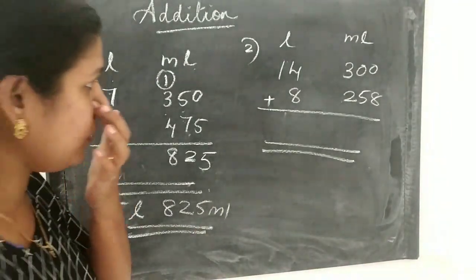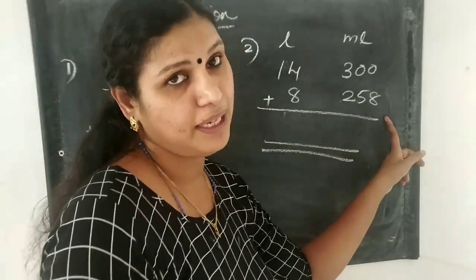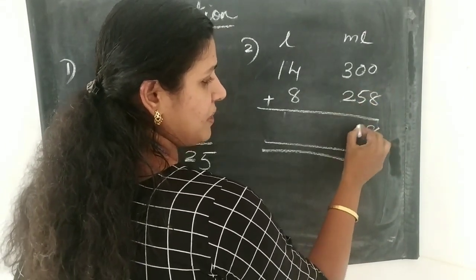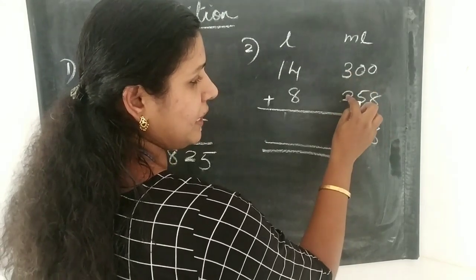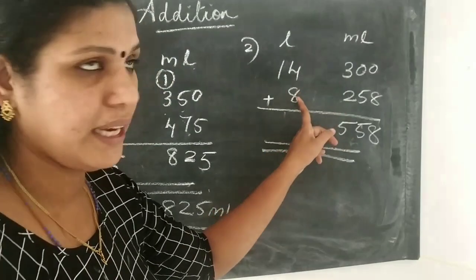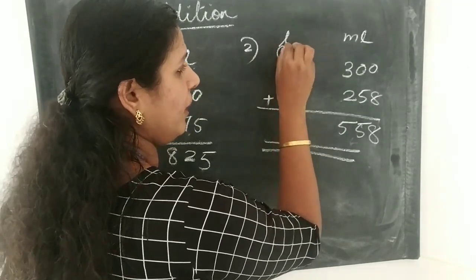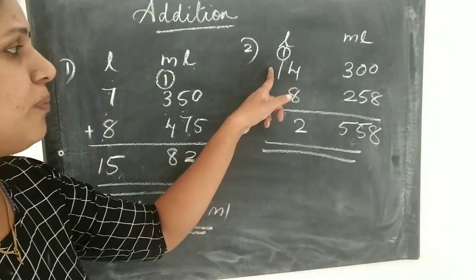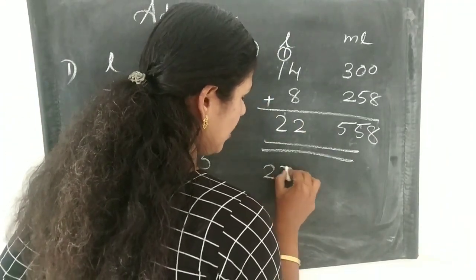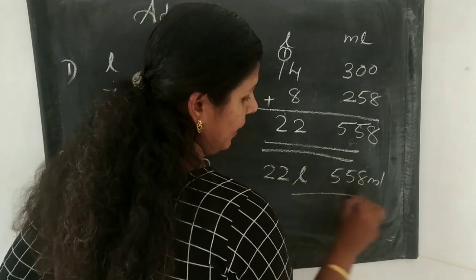Next problem: 14 litres 300 millilitres plus 8 litres 258 millilitres. Adding millilitres: 0 plus 8 is 8, 0 plus 5 is 5, 3 plus 2 is 5. Now litres: 4 plus 8 is 12 — write 2 carry 1. Then 1 plus 1 is 2. Answer: 22 litres 558 millilitres.